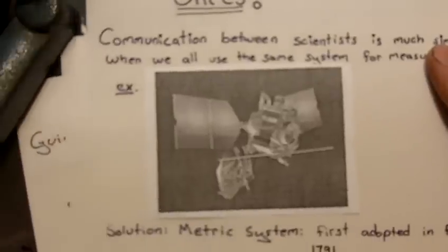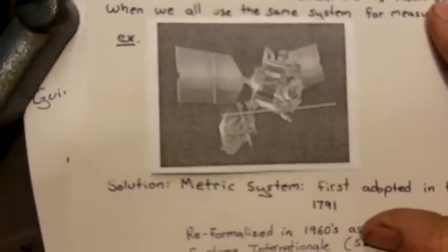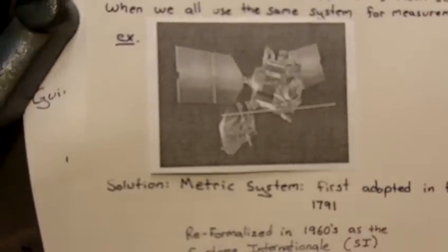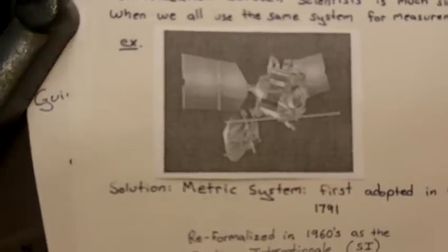So to get a common language for measurement, scientists use the metric system. A little bit of history on the metric system here. It was first adopted in France. France was the first country to adopt it officially. They adopted it in 1791.